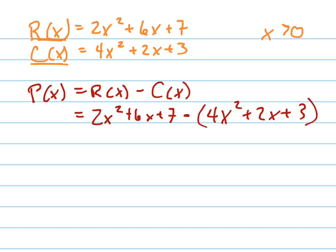So when I distribute that in, didn't mean to add as a slight to anybody in the room. When I distribute that in, I get, now I add like terms, negative 2X squared plus 4X plus 4. And that's my profit.